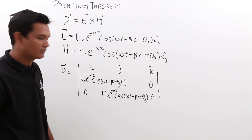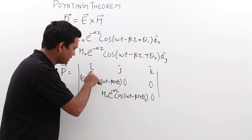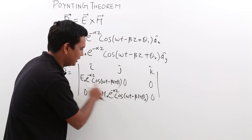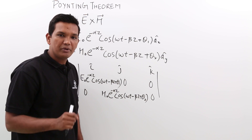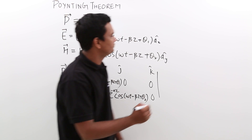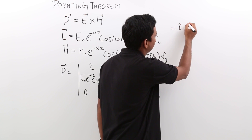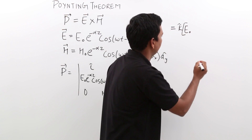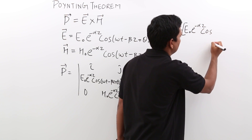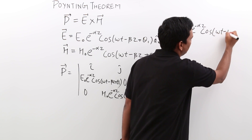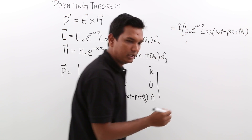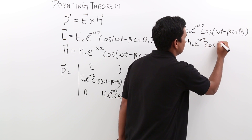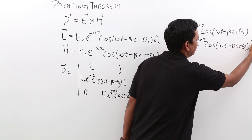Simplifying the cross product, the i-cap and j-cap components both go to zero. The only component that exists is along k-cap. The Poynting vector becomes: E-naught e to the power minus alpha-z cos(omega-t minus beta-z plus theta-1) multiplied by H-naught e to the power minus alpha-z cos(omega-t minus beta-z plus theta-2), directed along k-cap.